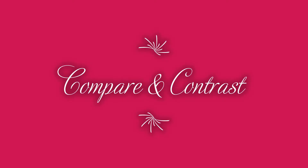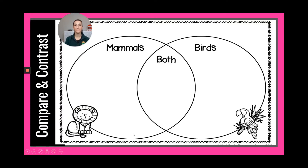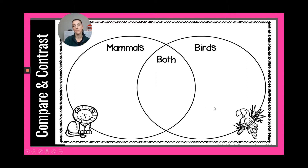Let's compare and contrast mammals and birds. What they have in common goes in the overlapping part of the two circles where it says 'both.' Whatever only mammals have that birds do not goes in the mammal circle, and characteristics unique to birds go in the bird circle — only birds have them, not mammals.